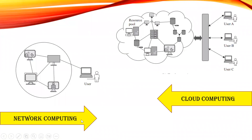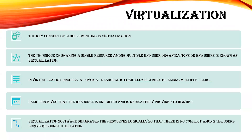Looking at the diagram, network computing is nothing but a user having a node where everything is interconnected. If a user wants something, it has to circulate among itself and find the resources. But in cloud computing, multiple users are using pooled resources — there are many resources from which any user can access any data, whereas in network computing only one user is accessing a particular dataset. This is the difference between network computing and cloud computing.